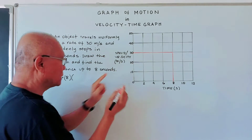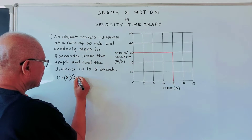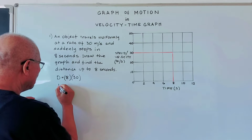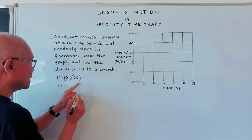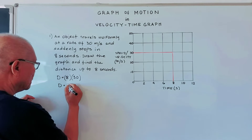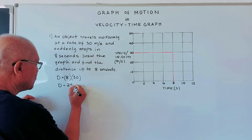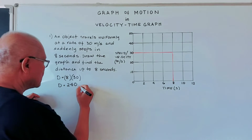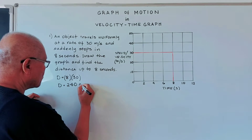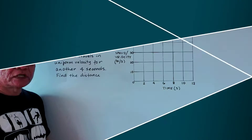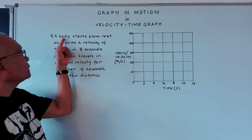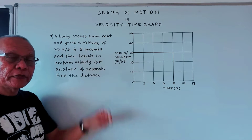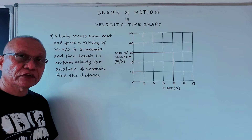The height is 30 meters per second, so our distance is 8 times 30 which gives us 240 meters. Number two: we have a body that starts from rest, meaning the initial velocity is zero.